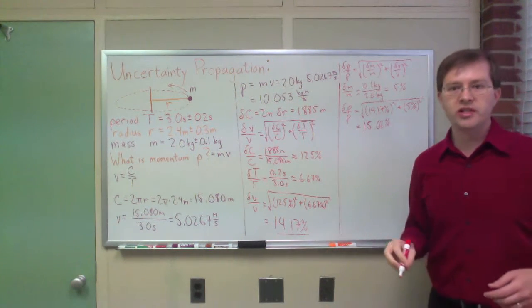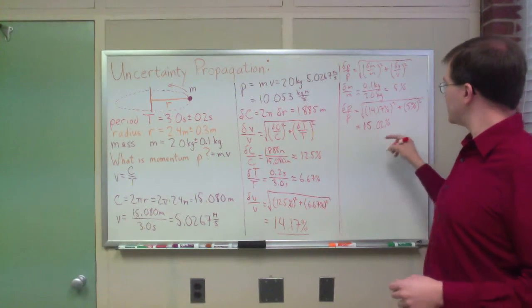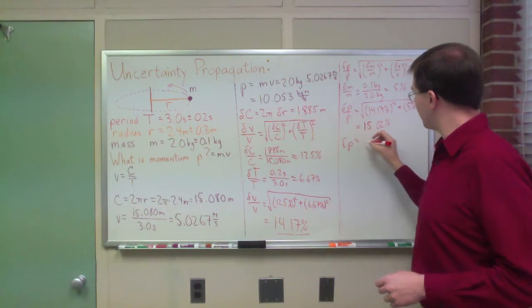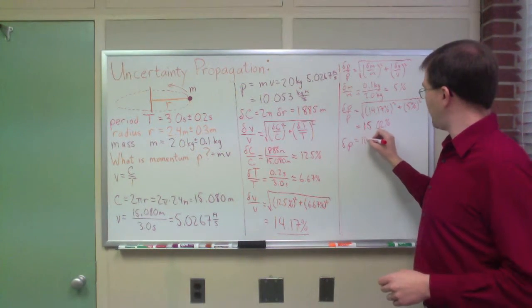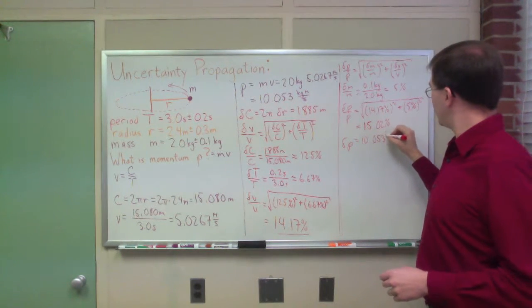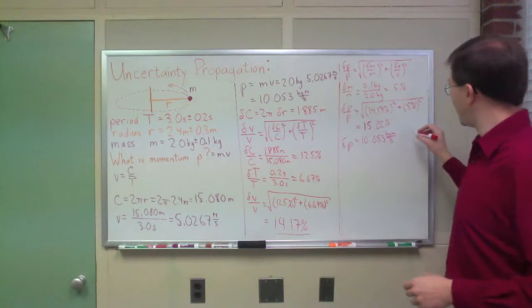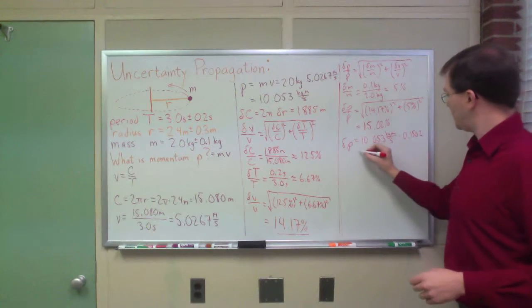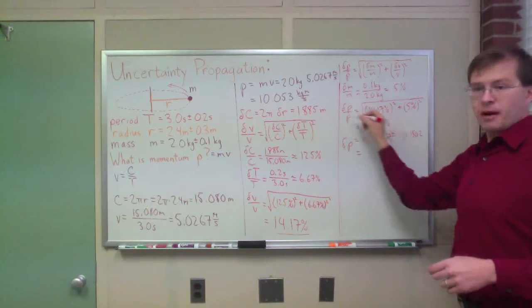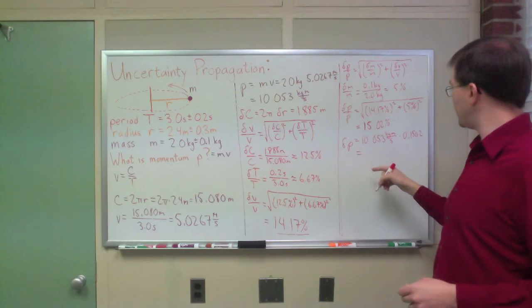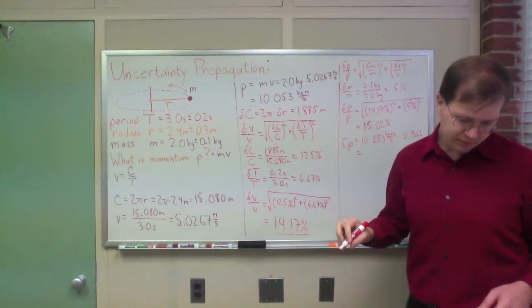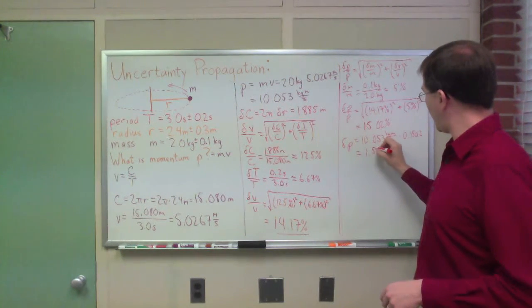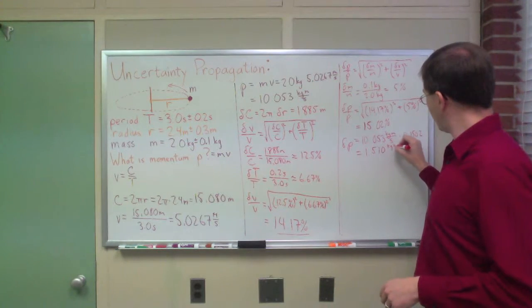That's more digits than I need, obviously, but 15.02%. So in other words, p then, my delta p is equal to 10.053 kilogram meters per second times 0.1502. Just multiplying that, multiplying both sides by p here to find my uncertainty of p. My absolute uncertainty in the momentum winds up being, looks like, basically, 1.510 kilogram meters per second.